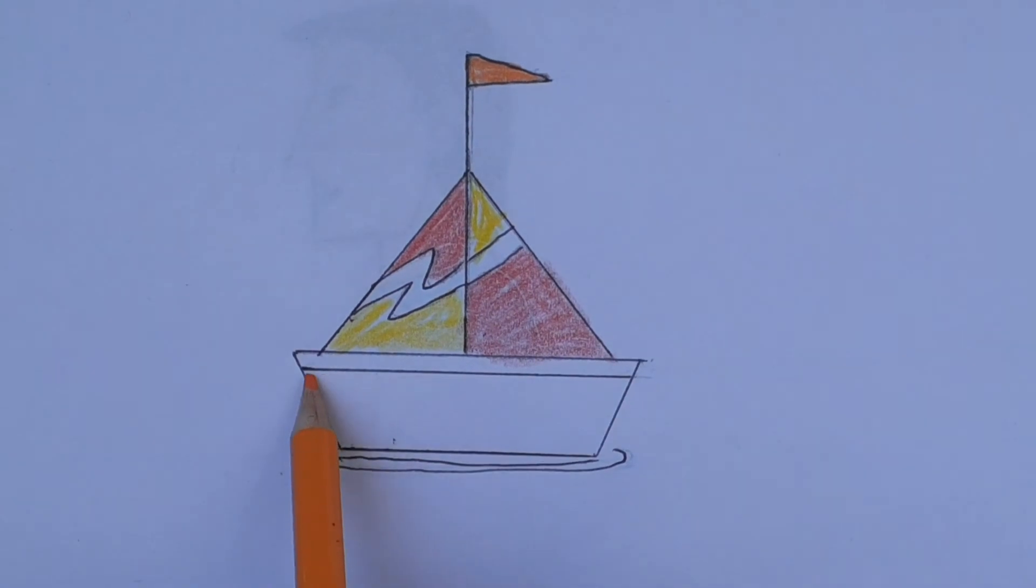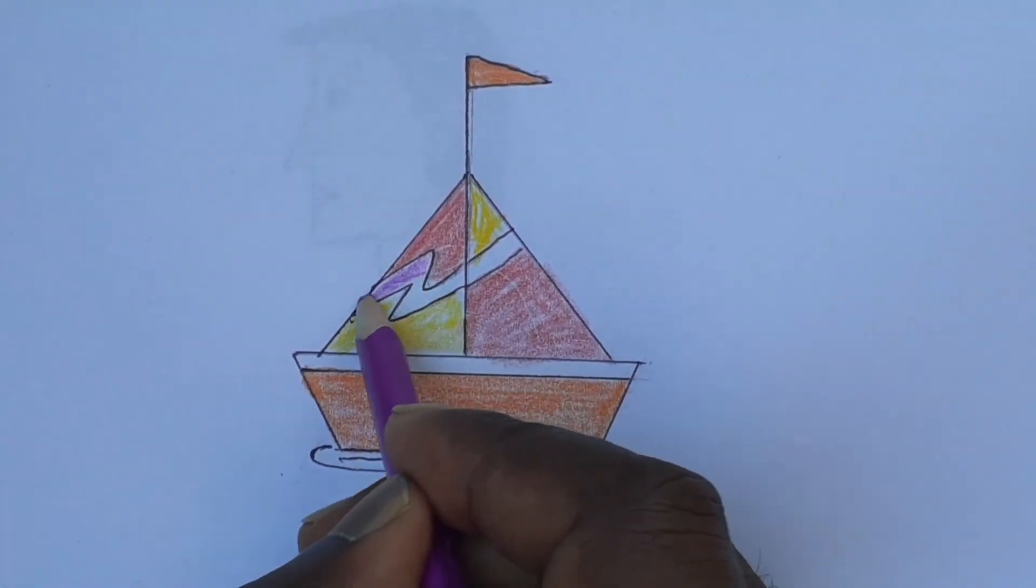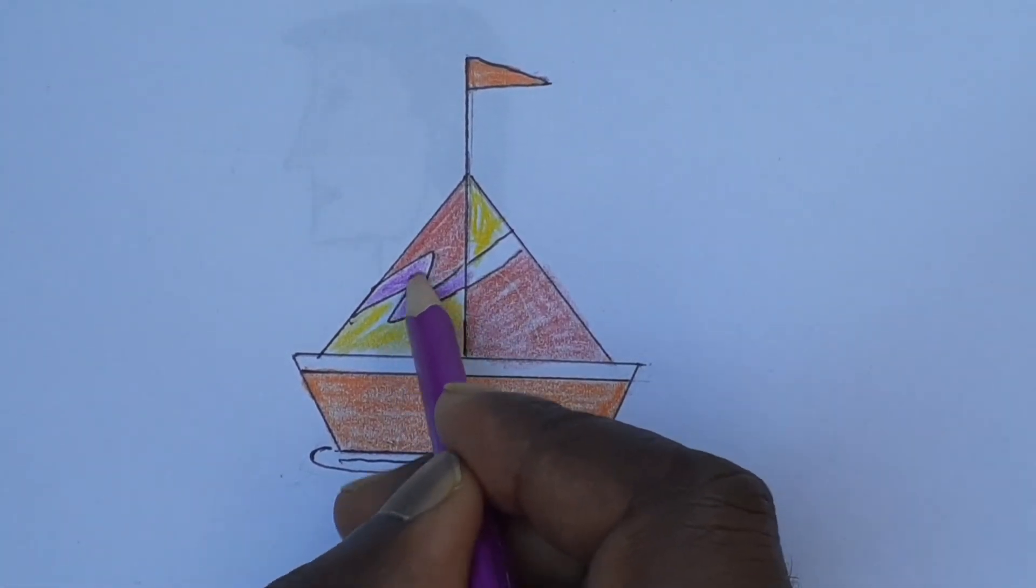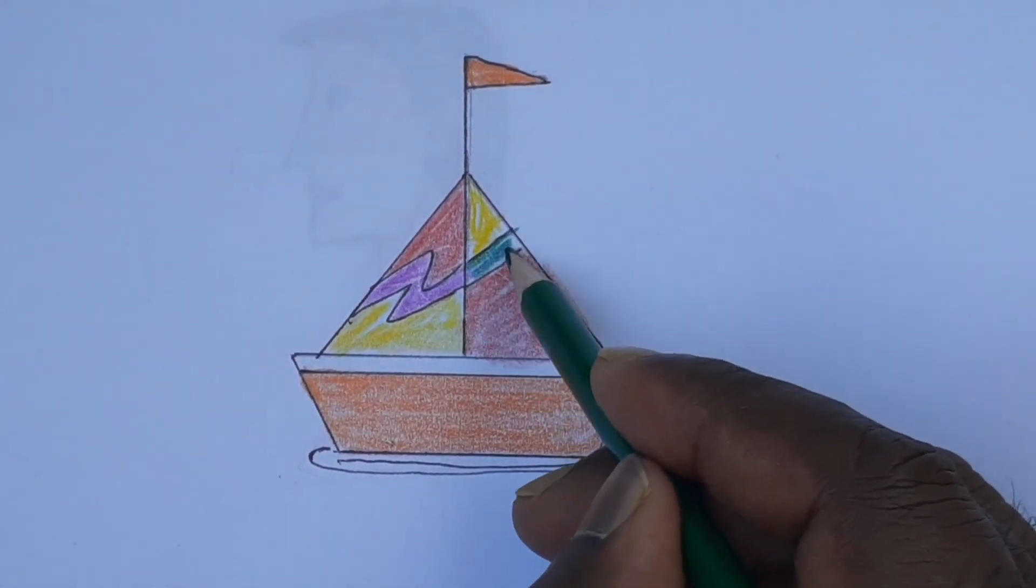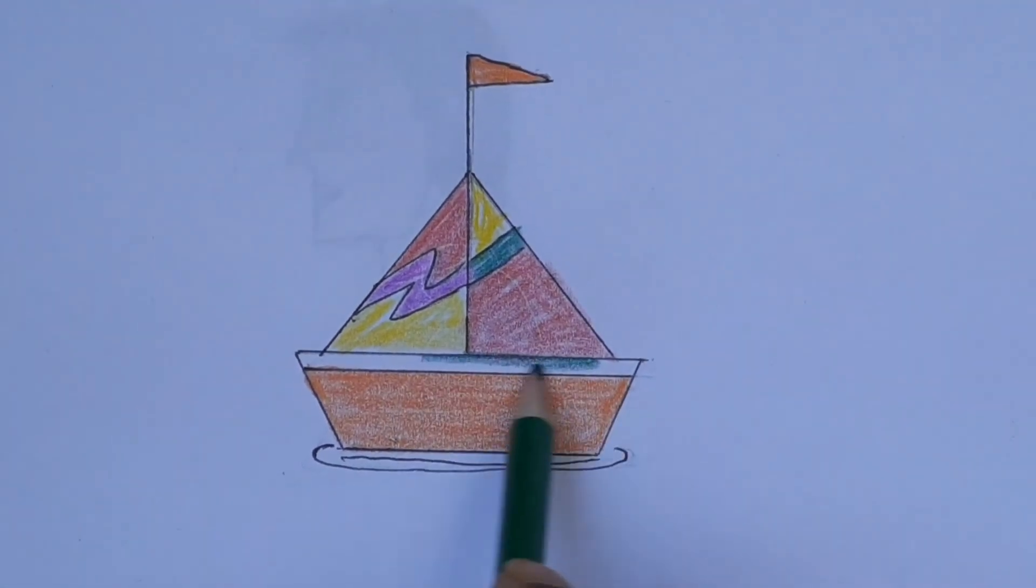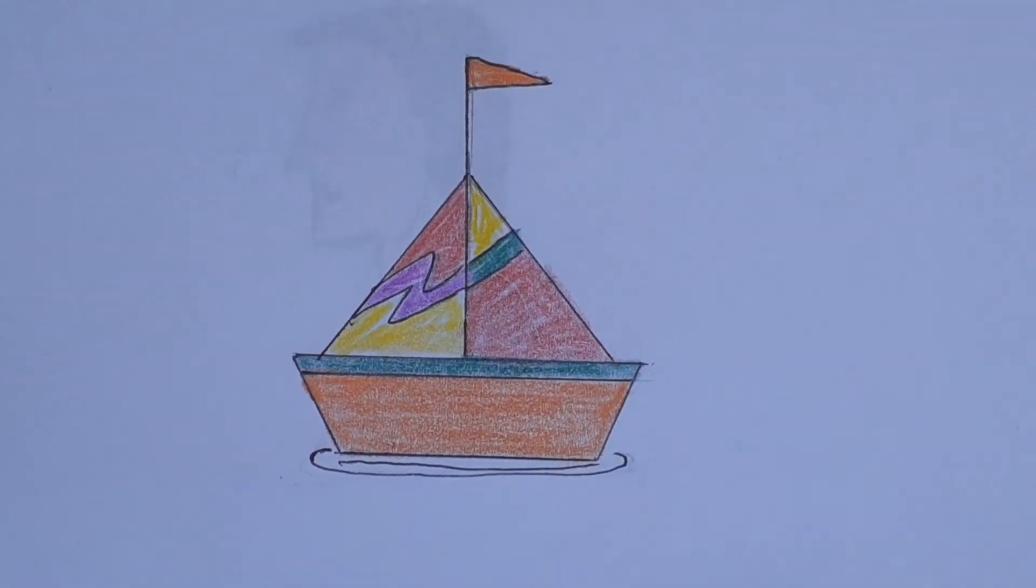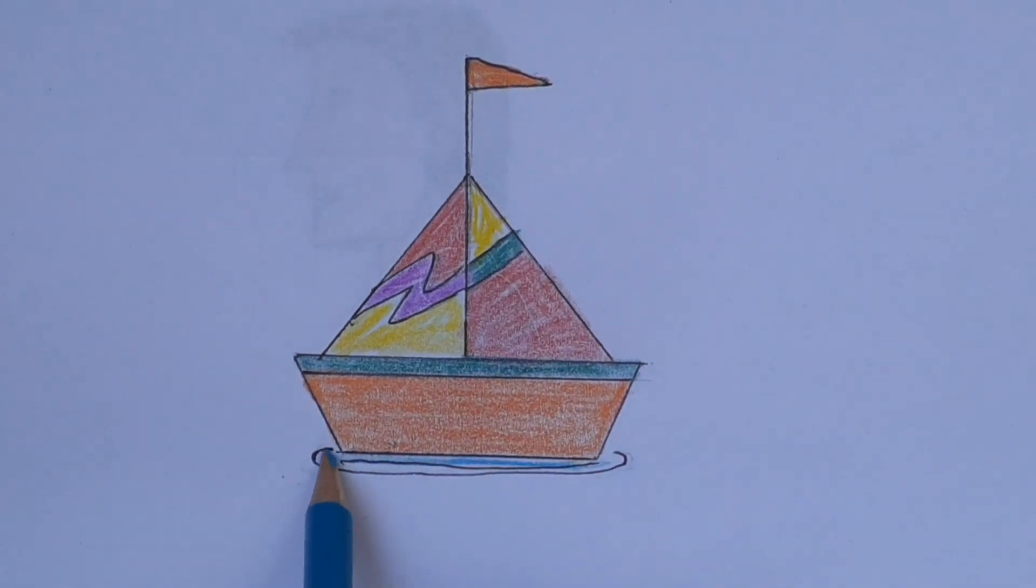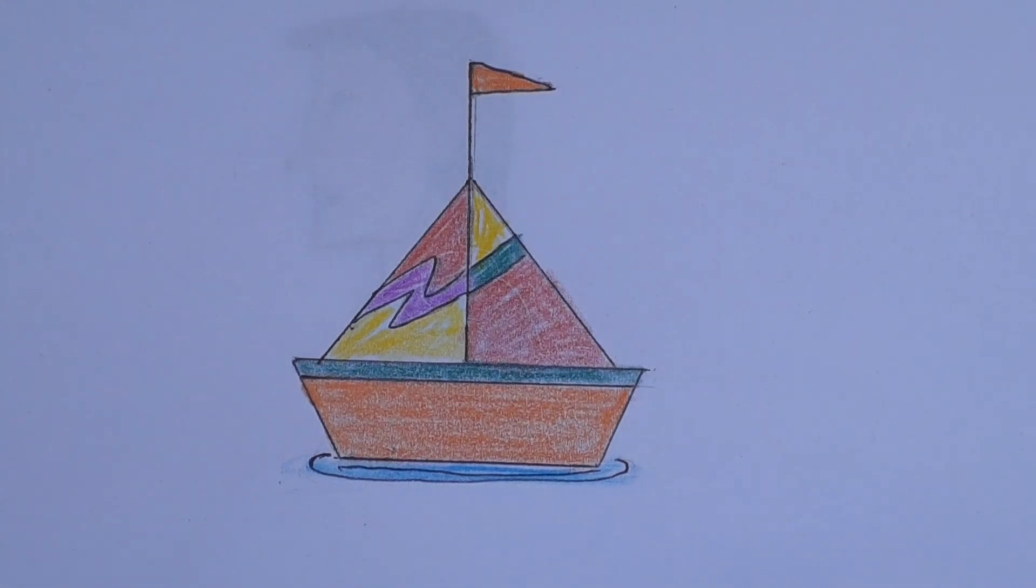And here yellow. Here purple, and here green color, and here green color here also. And water blue color here, draw lightly. Like this way, children, complete your work. See you in the next class, thank you.